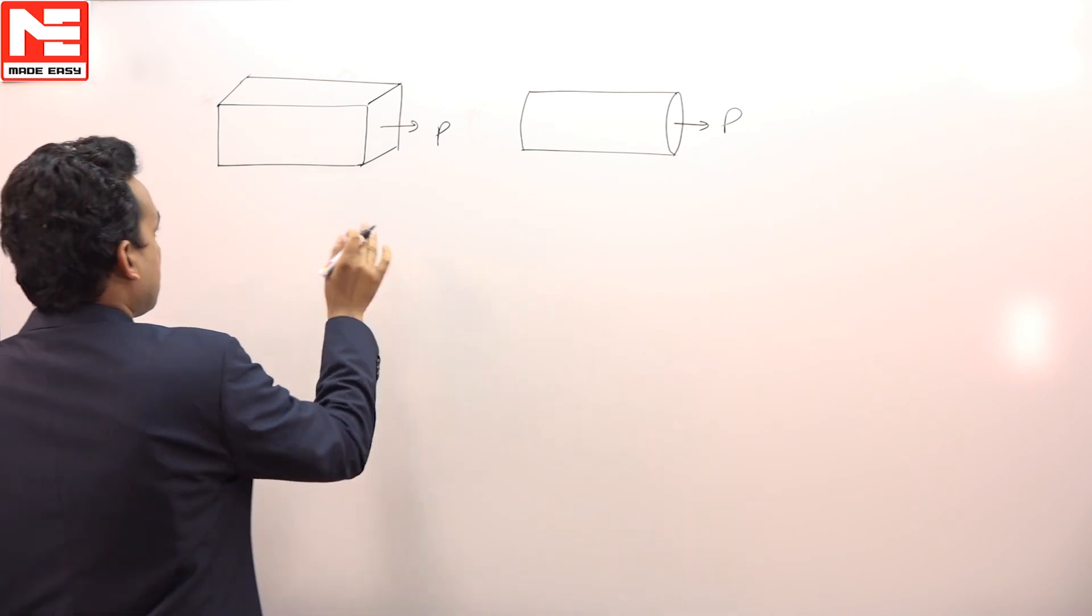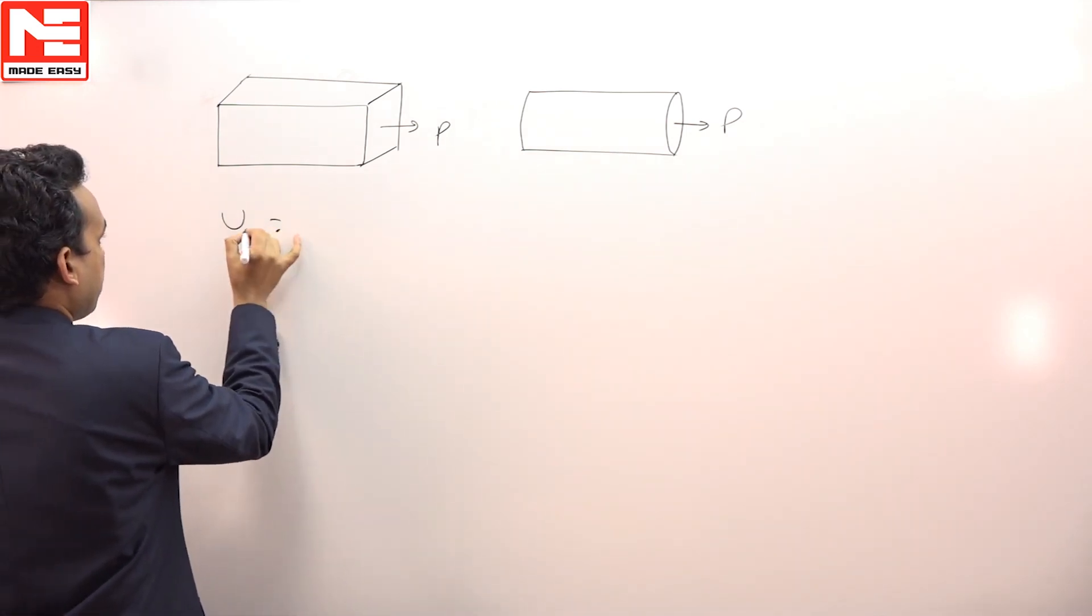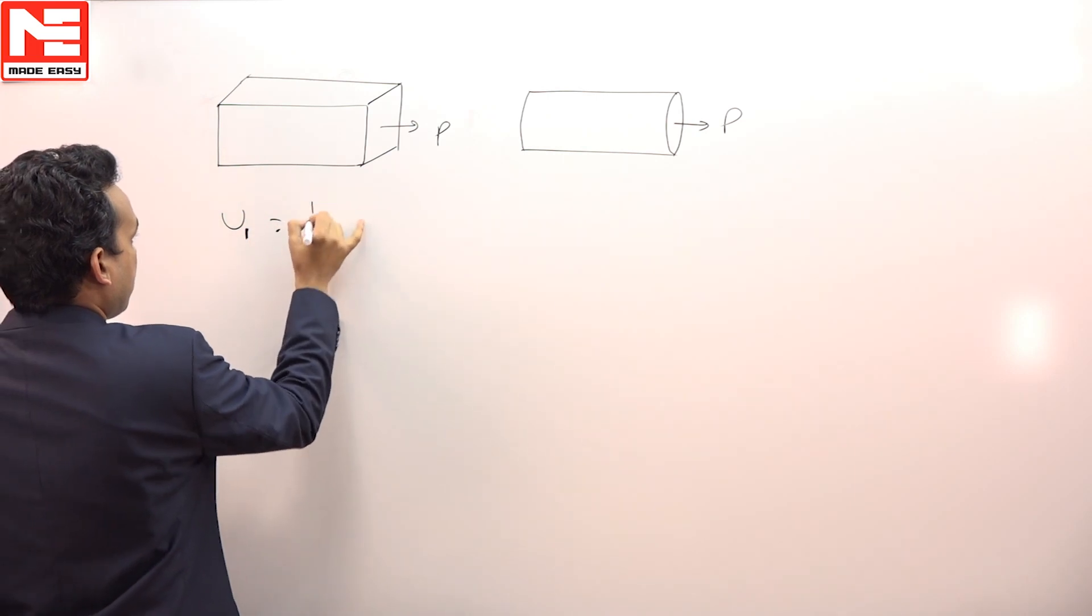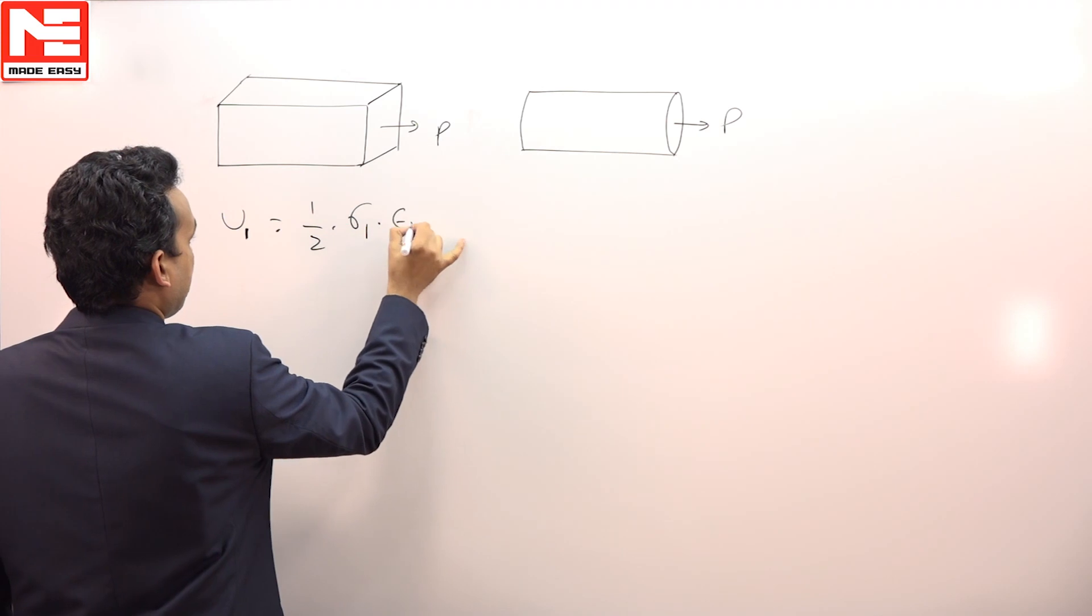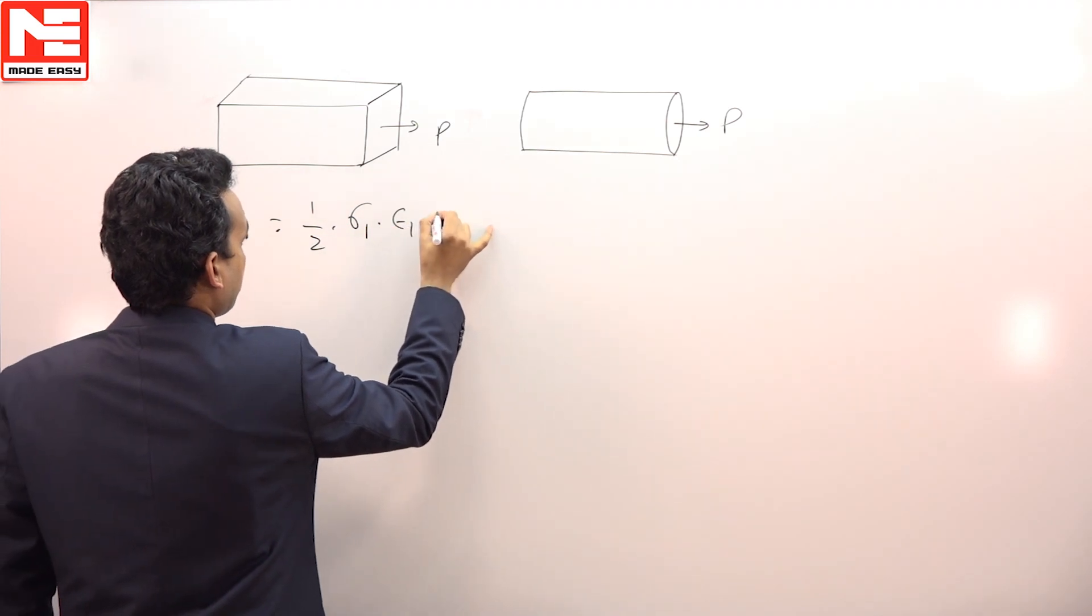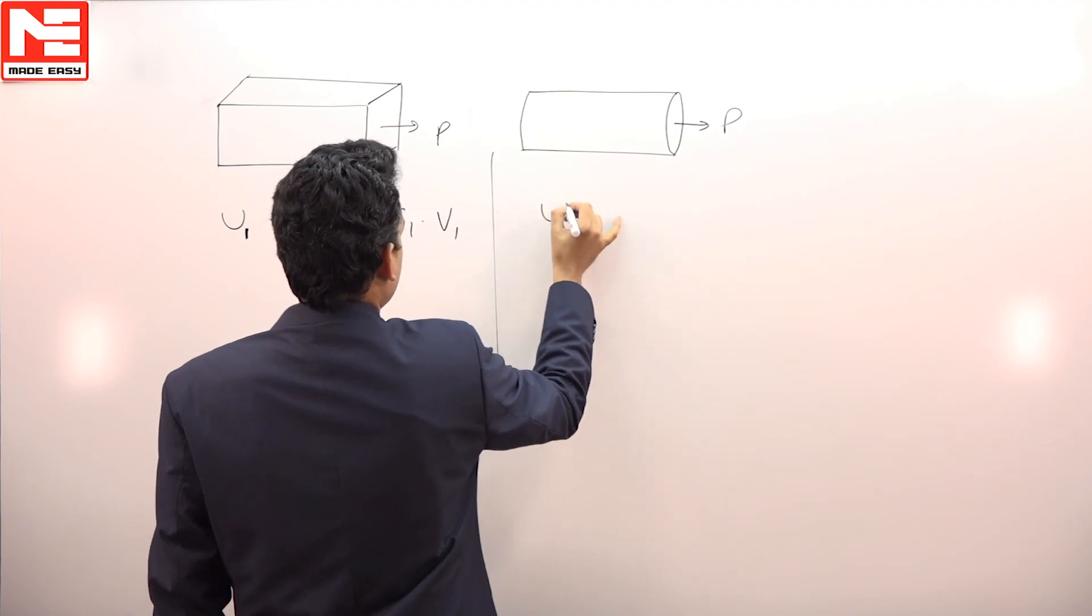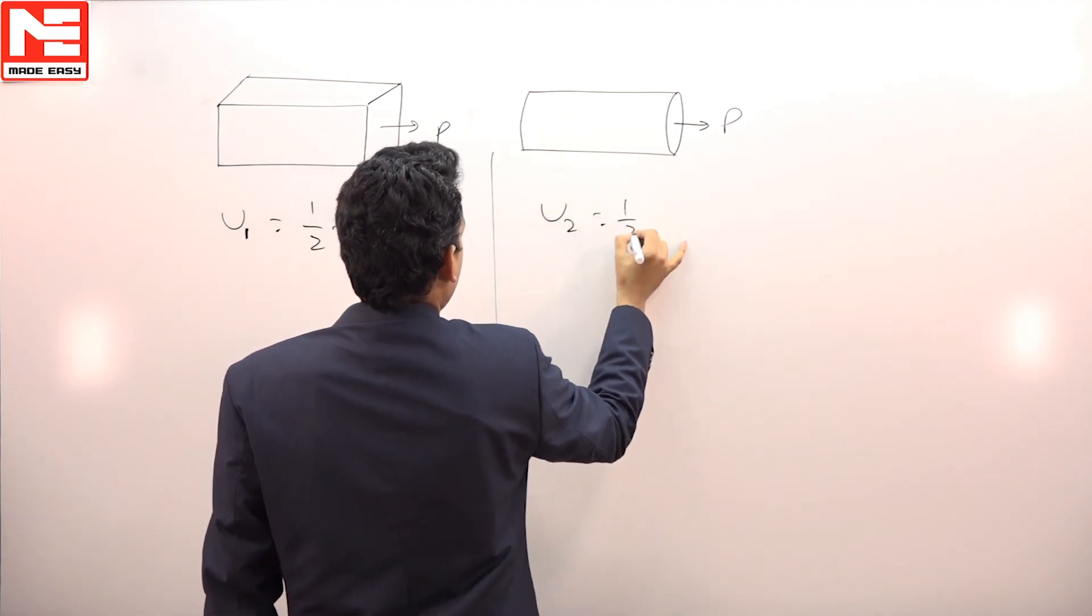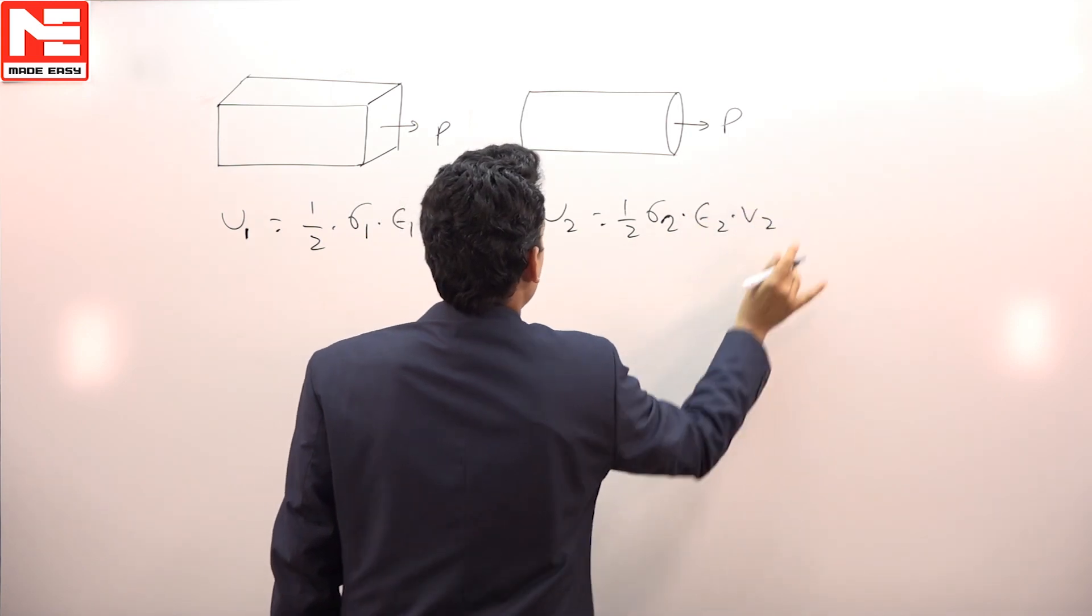Now the strain energy stored in both systems would be the same. In the first case, the strain energy U₁ should be equal to 1/2 × σ₁ × ε₁ × V₁. In this case, this should be equal to 1/2 × σ₂ × ε₂ × V₂.